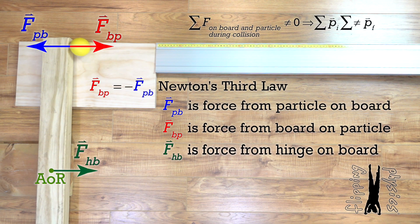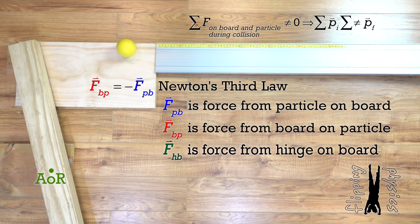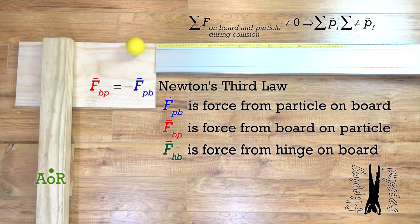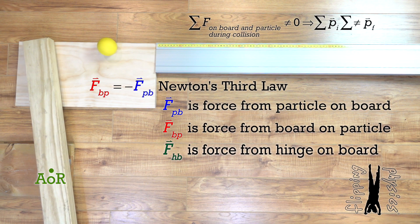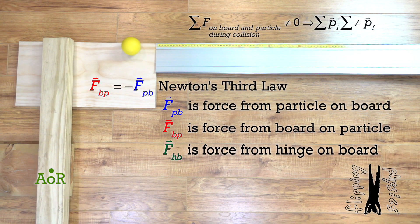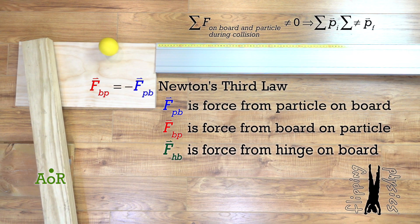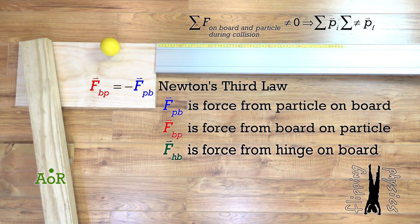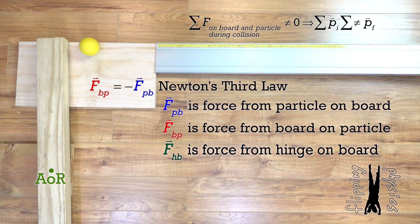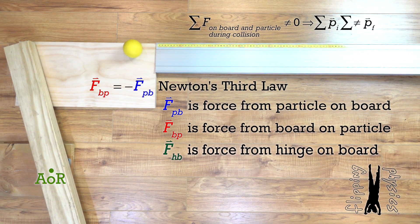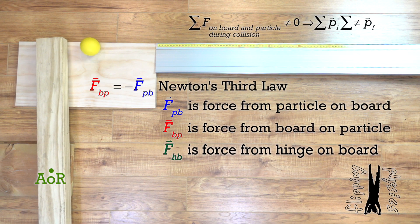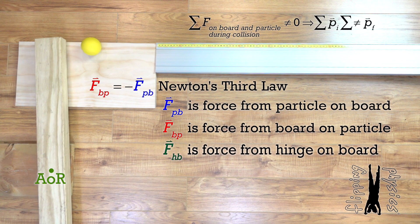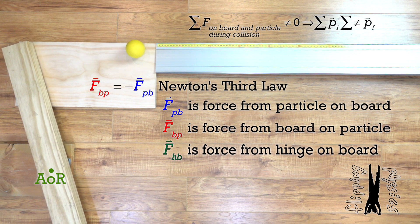Please realize this force from the pivot point only acts on the board and point particle system while the point particle is in contact with the board, which is only a very short time interval. Also, if the board were not held in place at the pivot point and were instead on a frictionless surface, there would be no net external force acting on the board and point particle system and linear momentum of the system would be conserved. After that collision, the board would enter into both rotational and translational motion.